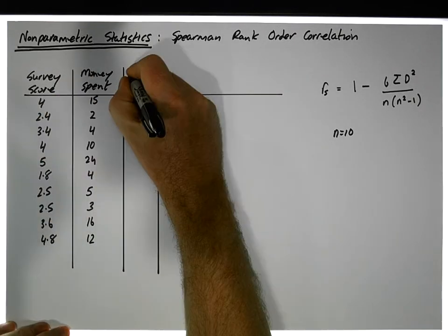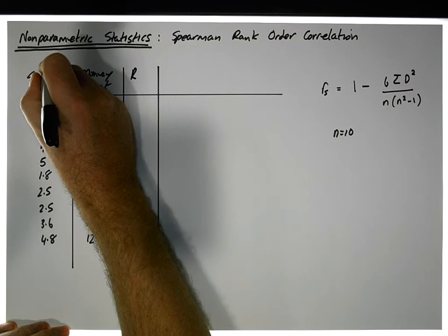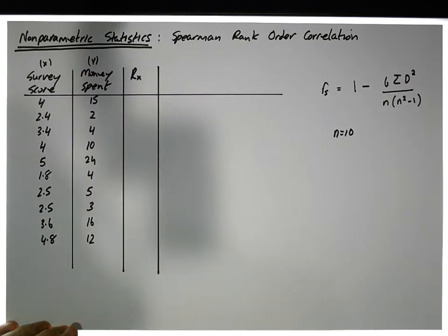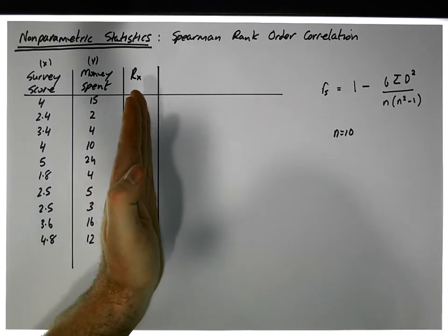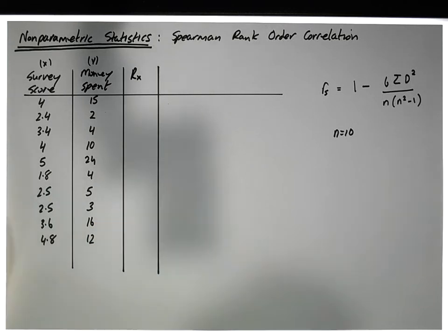So what we need to do is we need to rank. Let's say this is, let's call this our x and let's call this our y. So we need to rank our x values. And the way we do it is, because we're creating a new ordinal scale, we rank them from smallest to largest, the smallest value getting rank 1, the largest value getting rank 10 or 100 or whatever it might be, depending on how many observations there is.